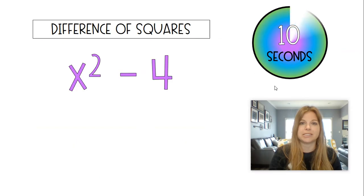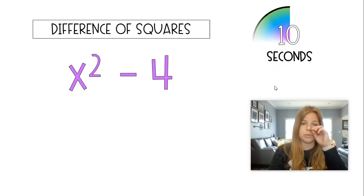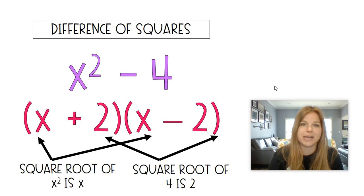x squared minus 4. Square root of each. One gets a plus, one gets a minus. x plus 2, x minus 2. Okay? Square root of x squared is x. Square root of 4 is 2. One gets a plus, one gets a minus. Next one.